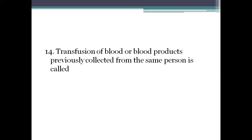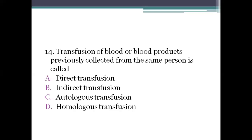Next question: transfusion of blood or blood products previously collected from the same person is called? Option A: direct transfusion. Option B: indirect transfusion. Option C: autologous transfusion. Option D: homologous transfusion. The right answer is autologous transfusion. In autologous transfusion, the donor and the recipient are the same person — blood is collected from one person and re-infused back to that same person.